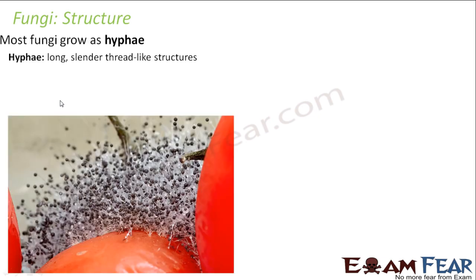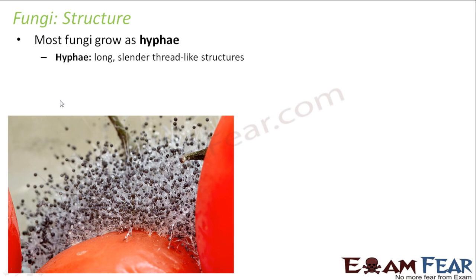With that basic information on the general characteristics, let us now talk about the structure of fungi — how the cell wall looks and what is inside the cytoplasm. Most fungi grow as hyphae. Hyphae are long, slender, thread-like structures. In the picture you can see white thread-like structures with a black blob at the top — those long white thread-like structures are hyphae. Whenever a fungi grows, it grows as hyphae, appearing as a net-like messy structure.